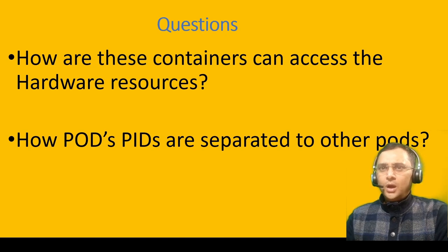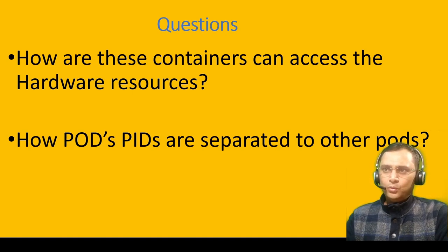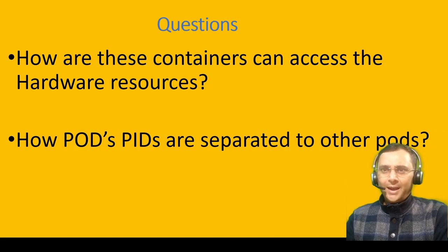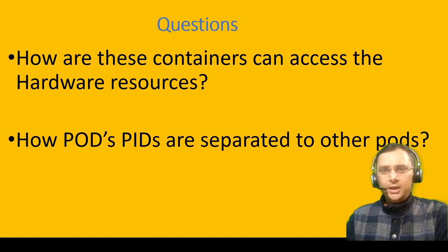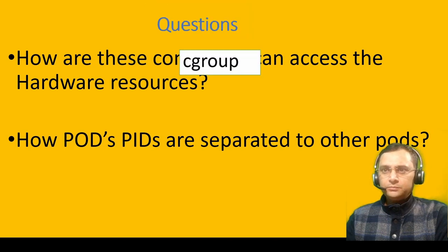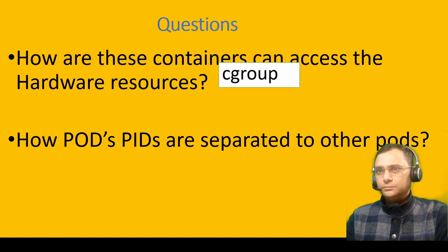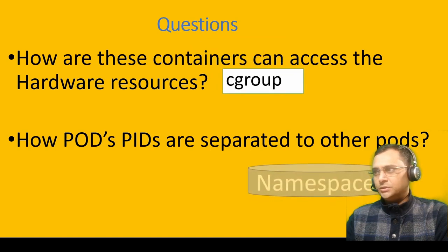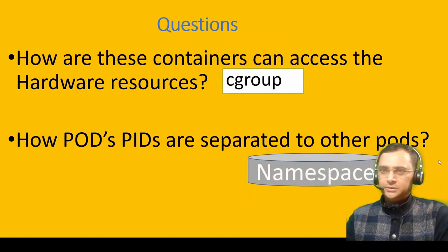Hardware resources are managed by one of the core components of the Linux kernel — that is cgroup. Dedicated process IDs are managed by namespace. Both are Linux kernel core components, and Kubernetes adopts this functionality. So this is cgroup, and this is namespace.